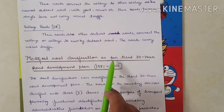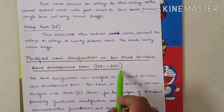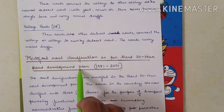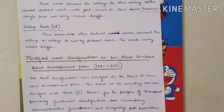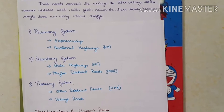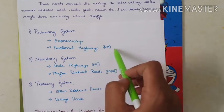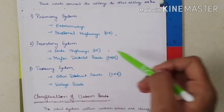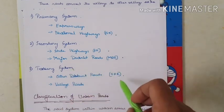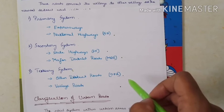The modified road classification as per the Third 20-Year Road Development Plan (1981–2001) introduced three systems: the primary road system consisting of expressways and national highways; the secondary road system consisting of state highways and major district roads; and the tertiary road system consisting of district roads and village roads.